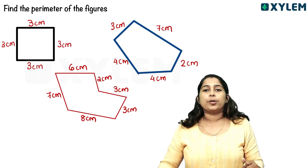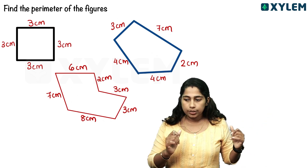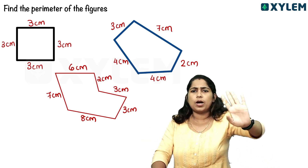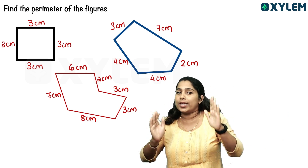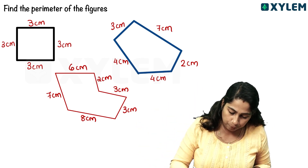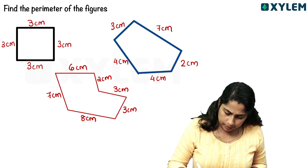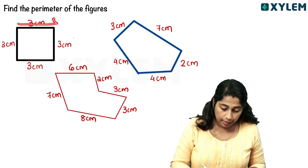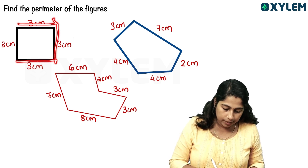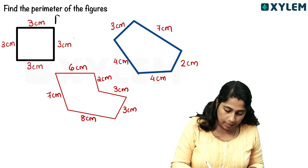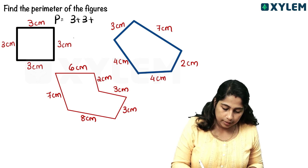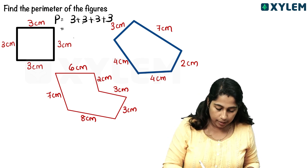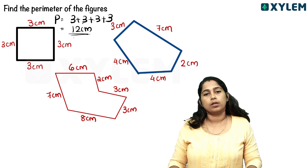We will use total boundary length as a perimeter. Let's try it. This side is 3 cm. The boundary length is 3 cm, 3 cm, 3 cm. So the perimeter is equal to 3 plus 3 plus 3 plus 3. That gives us 6, then 9, then 12. The perimeter is 12 centimeters.